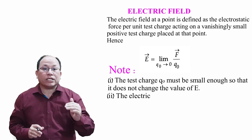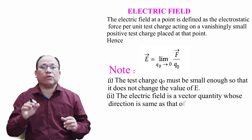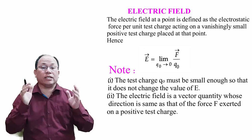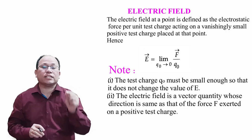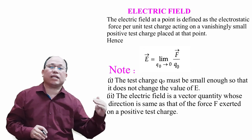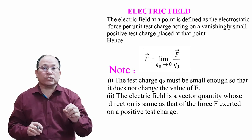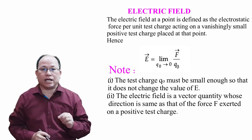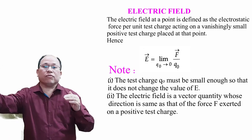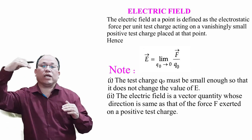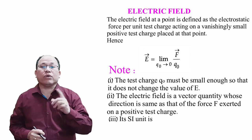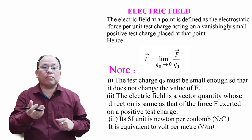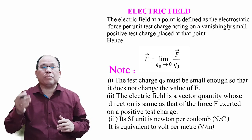Second point: the electric field is a vector quantity whose direction is the same as that of the force exerted on a positive test charge. If the source charge is positive, the electric field is radially outward. If the source charge is negative, the force will be acting inwards. Third point: its SI unit is newton per coulomb, or equivalently volt per meter.